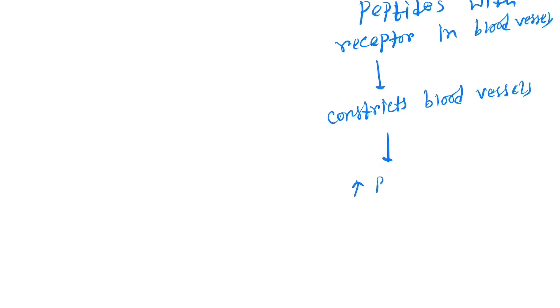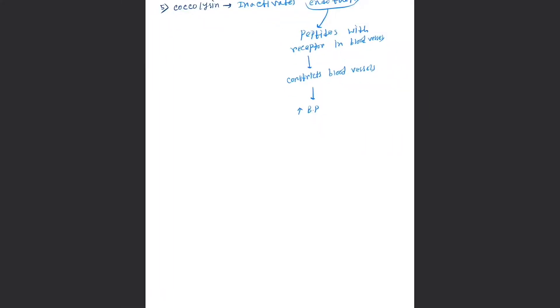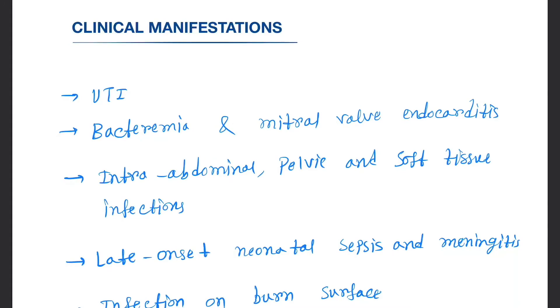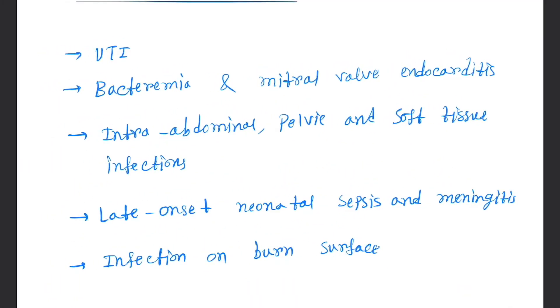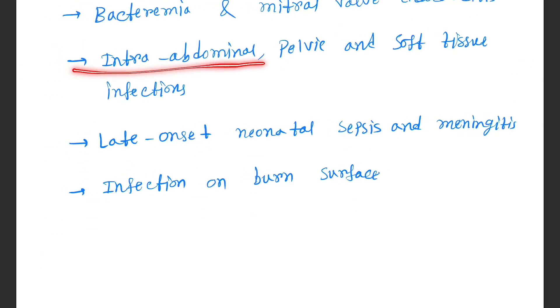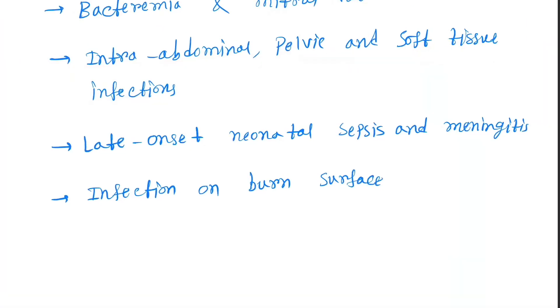These are the virulence factors. Now for clinical manifestations: Enterococcus causes urinary tract infections, bacteremia, mitral valve endocarditis, intra-abdominal, pelvic and soft tissue infections, late-onset neonatal sepsis and meningitis, and infection of burn surfaces.